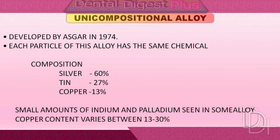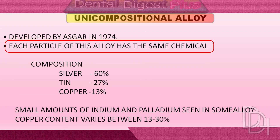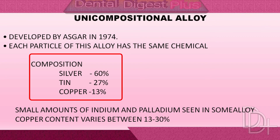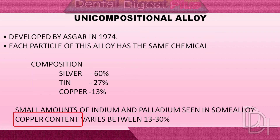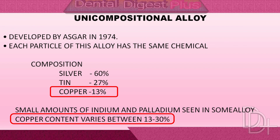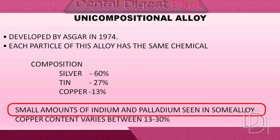The success of admixed amalgams has led to the development of another type of high-copper alloy. Unlike admixed alloy powders, each particle of these alloy powders has the same chemical composition; therefore they are called single-composition alloys. Alloy of this type contains 60 weight percent silver, 27 weight percent tin, and 13 weight percent copper. Copper content in various single-composition alloys ranges from 13 to 30 weight percent. Small amounts of indium or palladium are included in some currently marketed single-composition alloys.